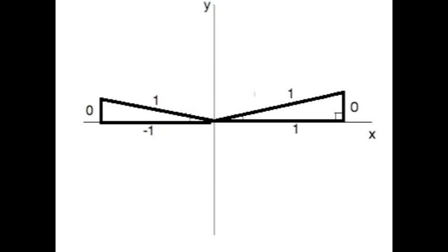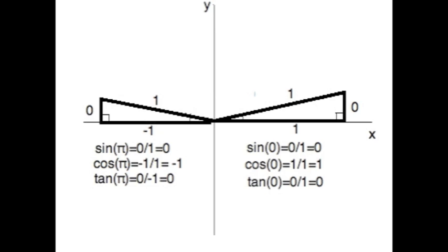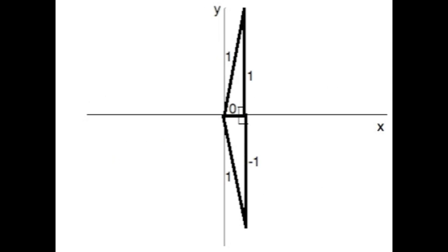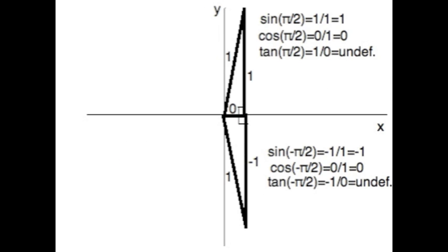For angles on axes like zero or pi, imagine the opposite sides zero wide. Same deal for plus or minus half pi. Zeros go on adjacent sides.